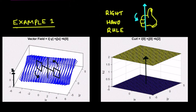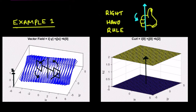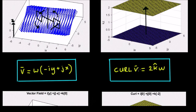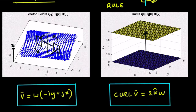Let's imagine that we stuck a paddle in this field. You can see this field is rotating in the anti-clockwise direction, so there's going to be some force striking this paddle in one direction and some force striking the paddle in the other direction, which is going to make the paddle turn anti-clockwise. From the right-hand rule, the vector given by the curl is going to be in the k direction. From the derivation done in the previous video, the curl is going to be given by the value 2kω, where ω is the angular velocity.